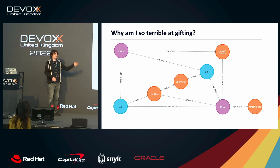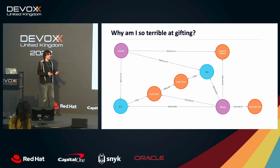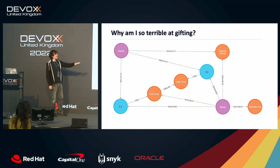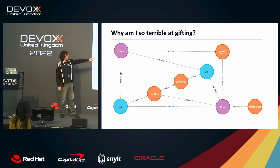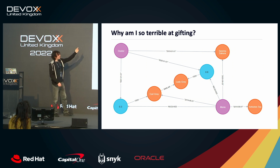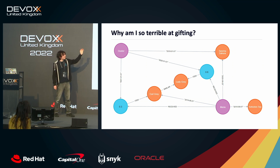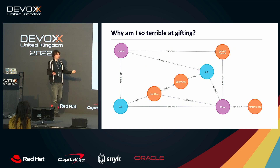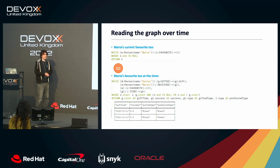Going back to the graph, I've put some dates on things. You don't have to timestamp everything if time isn't a component, but it can make your life easier. All I've done is add a start and end time to the relevant relationships. We can see Maria started liking Yorkshire tea, switched in 2019 to prefer Earl Grey, then switched again in 2020 to prefer Sakura Sencha. I gave the first gift when she still liked Earl Grey, so Lady Grey was a good gift.